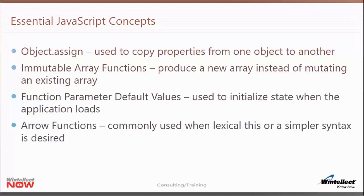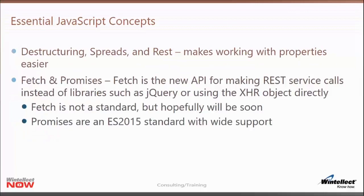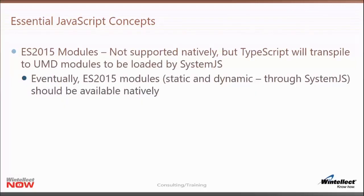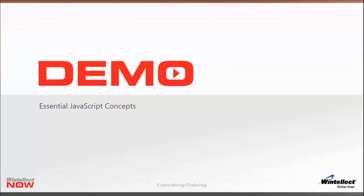Function parameter default values are really nice for the reducer function to initialize the state parameter if no value is passed in. Arrow functions — we're going to use tons of arrow functions all over the place. Destructuring, spread, and rest make working with properties easier. For fetch and promises: fetch is a newer API we'll use to call into a REST API. We're not going to use Redux middleware for async operations — we'll do it manually ourselves to better understand state management.